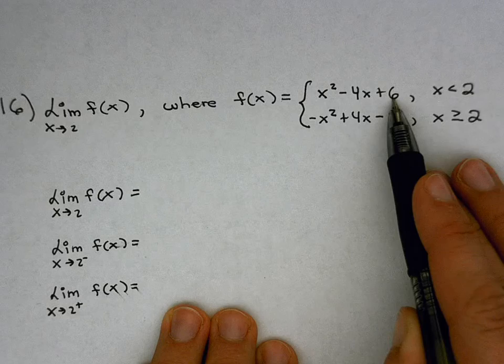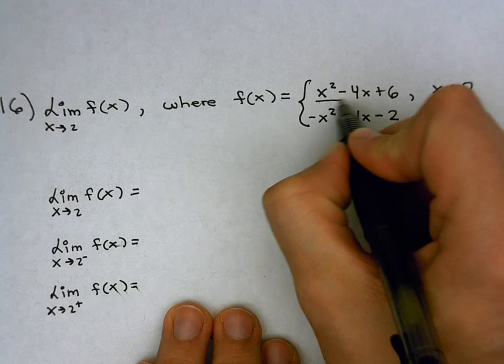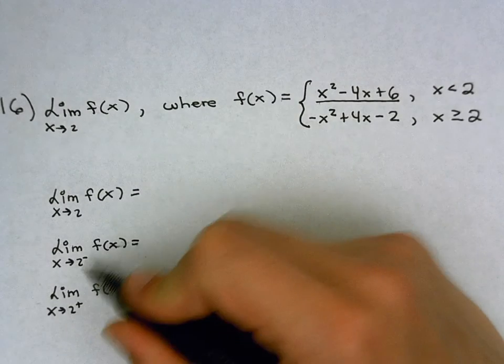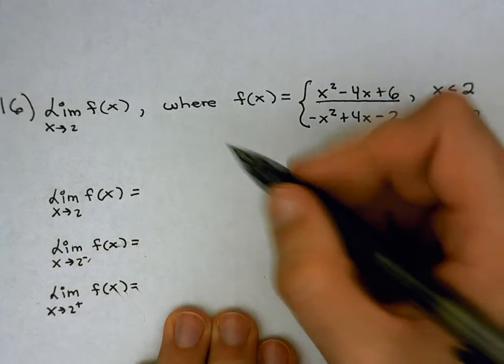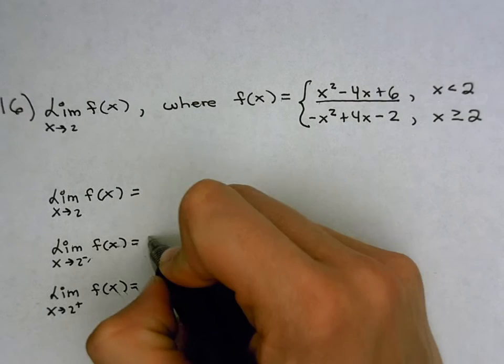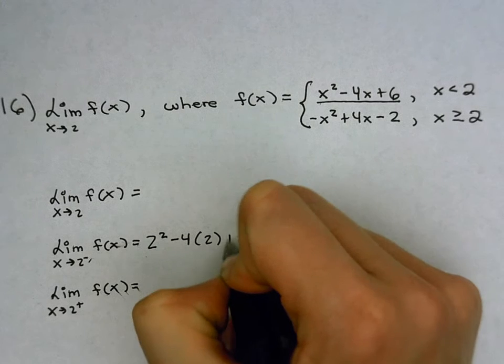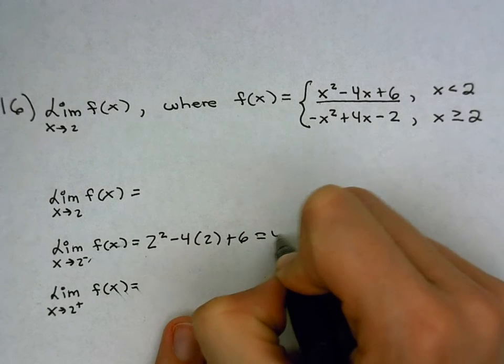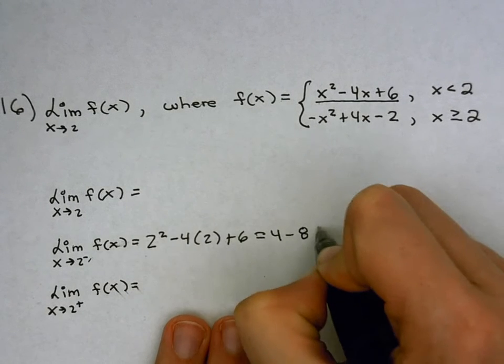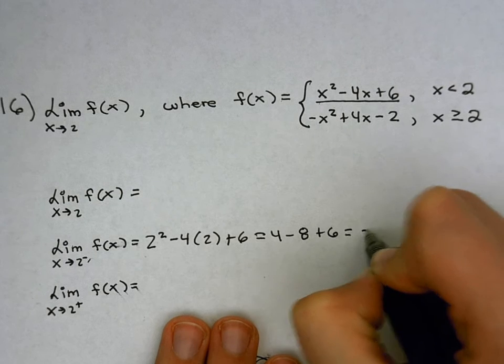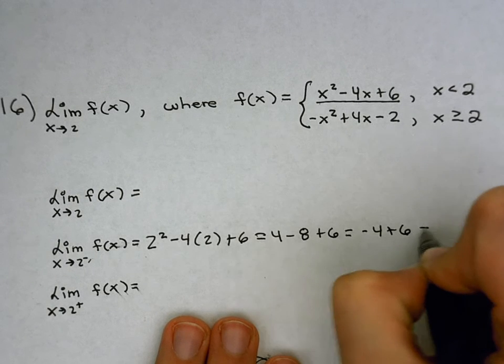And so this top function is the one I'm going to use to find the limit as we approach 2 from the left. Okay, so I'm going to take that 2, plug it into my top function. I get 2 squared minus 4 times 2 plus 6, which is 4 minus 8 plus 6, which is negative 4 plus 6, which is 2.